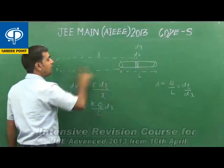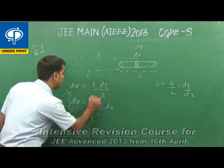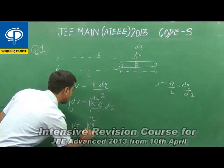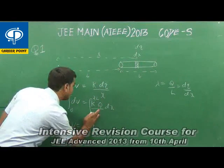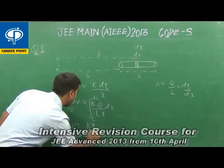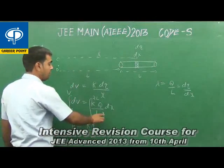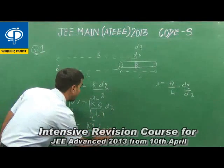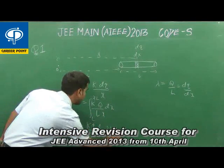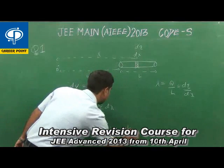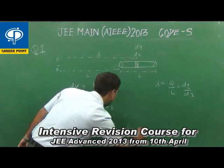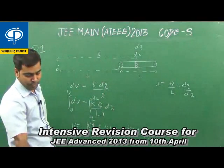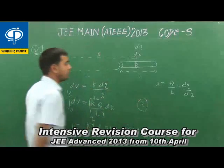The limits for x go from L to 2L. So V = k·(Q/L) · integral from L to 2L of (1/x) dx, which gives ln(2). The final answer is k·Q·ln(2)/L, which is option 2.